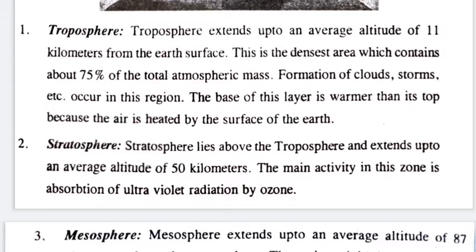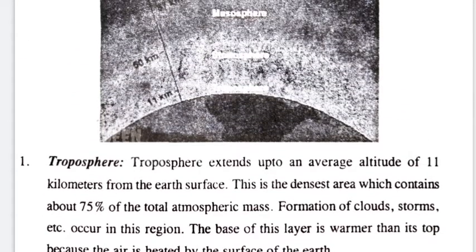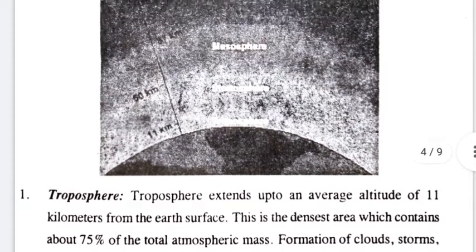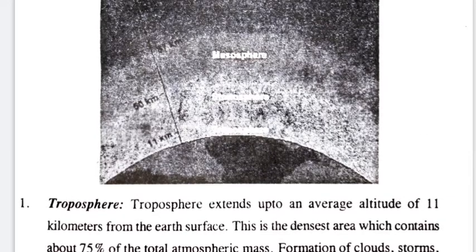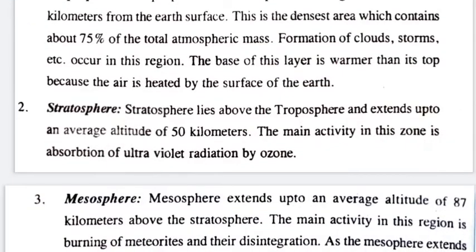The first layer is the troposphere. The troposphere extends up to an average altitude of 11 kilometers from the Earth's surface. This is the densest area, which contains about 75% of the total atmospheric mass.